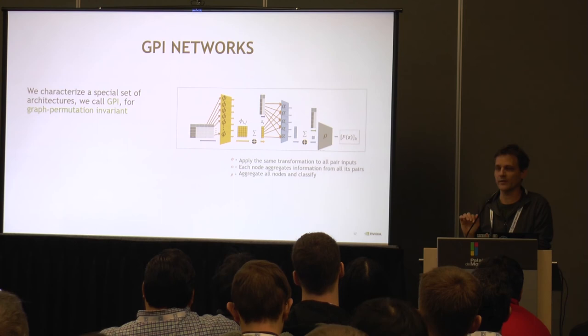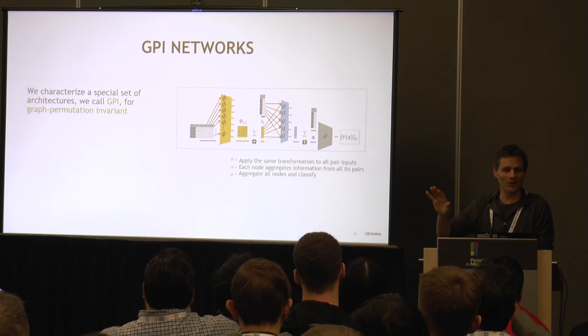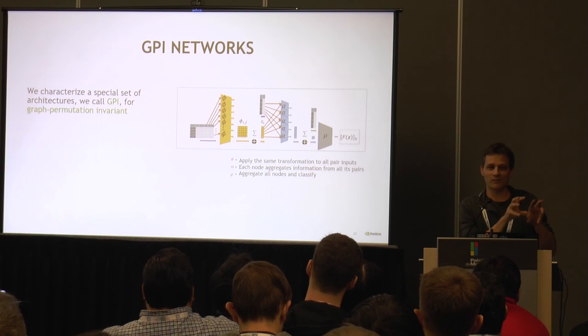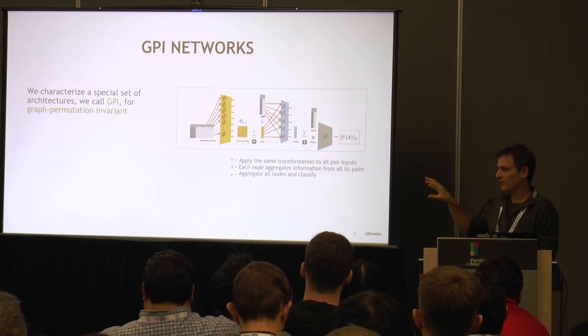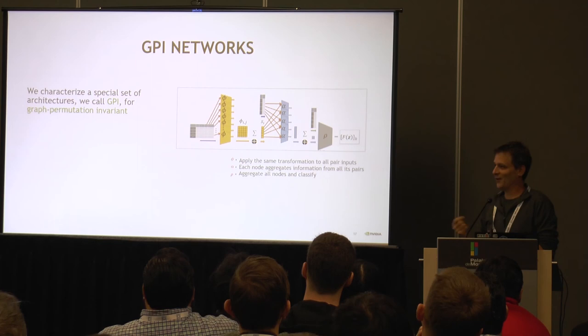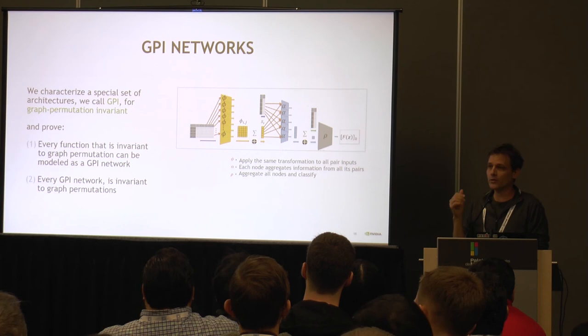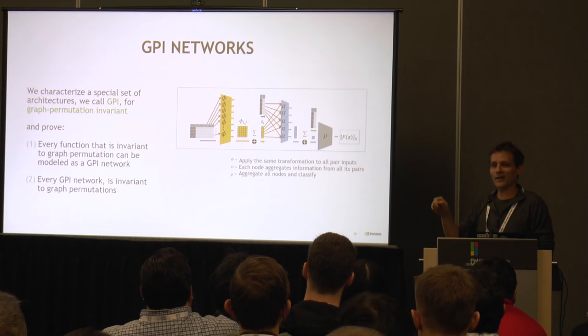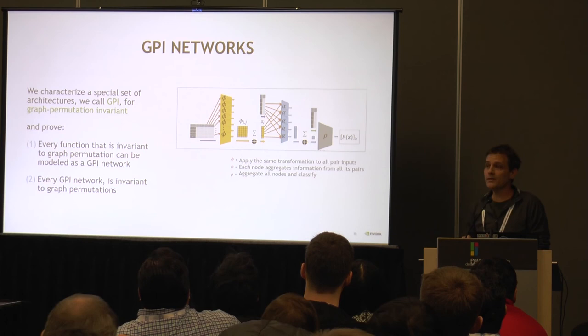I'm showing a sketch of this architecture on the right — it's more like a meta-architecture where you can plug in your favorite module instead of phi, alpha, and rho — like maybe fully connected or another neural network. These modules are coordinated such that the full architecture has two very important properties: first, it is invariant to graph permutation; and second, we can show that every function that is graph permutation invariant can be represented as this architecture. There exist alpha, phi, and rho that allow you to represent that function using this architecture. This allows us to just study this type of architecture for the problem of images to scene graphs.